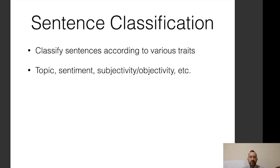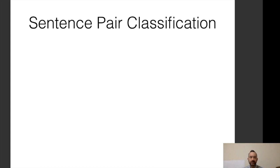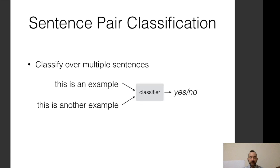In sentence classification, we classify sentences according to various traits — like the sentiment analysis example I've given many times. Other examples include topic, subjectivity, objectivity, and basically any label you can put on a sentence. There's also a broad variety of sentence pair classification tasks, where you have one sentence and another sentence and make some decision over them.